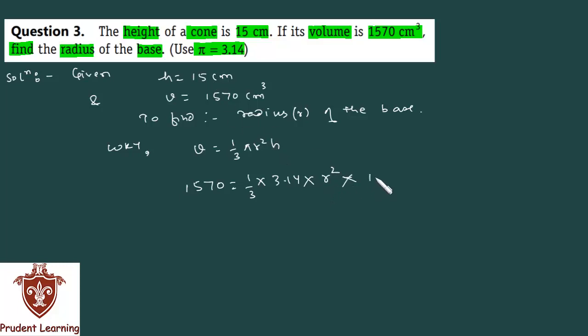Calculation is not difficult. 3 ones are 3 and 3 fives are 15. If you need radius, then keep r here, take 3.14 and 5 to the denominator to make it.